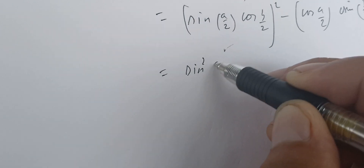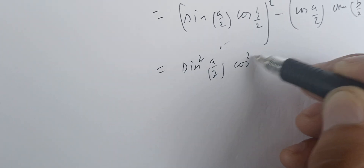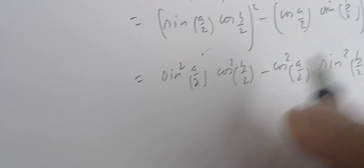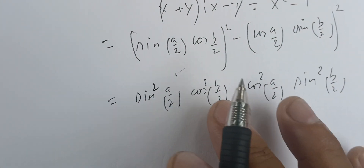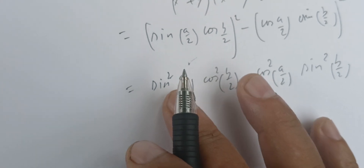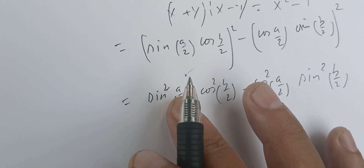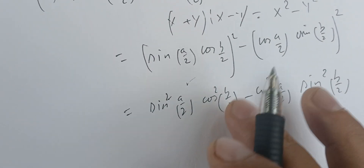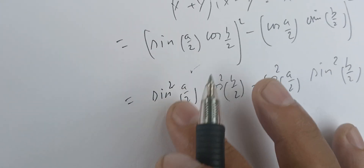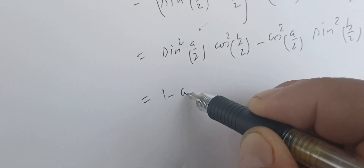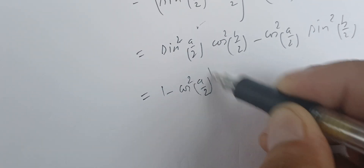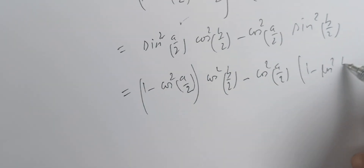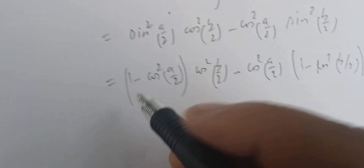Now we're going to replace one of the values: sine²(a/2) becomes 1 minus cos²(a/2), and cos²(b/2) becomes 1 minus sine²(b/2). So we get (1 - cos²(a/2))·cos²(b/2) minus cos²(a/2)·(1 - cos²(b/2)).